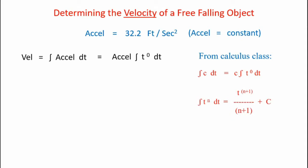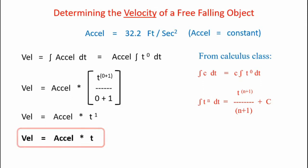Now here's the process for integrating. We'll apply that to our equation. So velocity is equal to acceleration times t to the zero plus one over zero plus one. And that becomes velocity is equal to acceleration times t to the first. And t to the first is t, so velocity is equal to acceleration times time. And that's one of the equations we'd like to have.